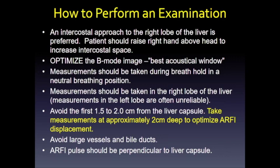The examination is performed using an intercostal approach to the right lobe of the liver. Substernal approaches or imaging the left lobe often require extra pressure and probe angulation away from perpendicular to the liver capsule, causing problems. We optimize the B-mode image — which indicates the best acoustical window — ensuring no shadowing, so we get a stronger ARFI pulse, stronger shear waves, and better tracking. A poor B-mode image means we cannot track shear waves.